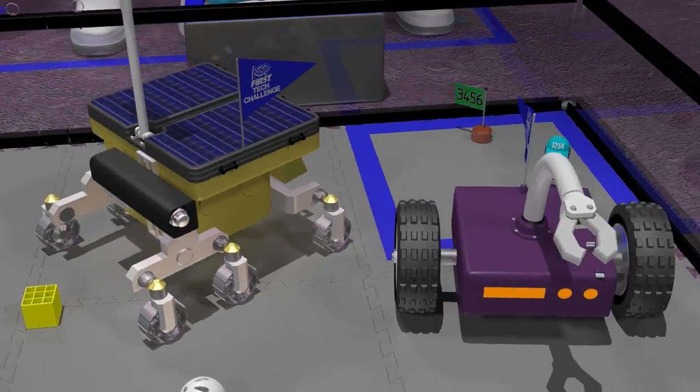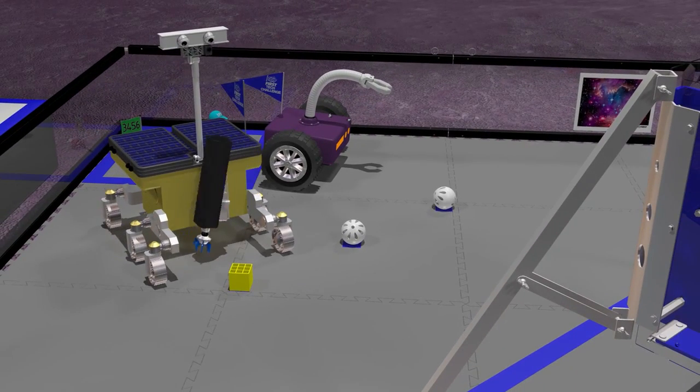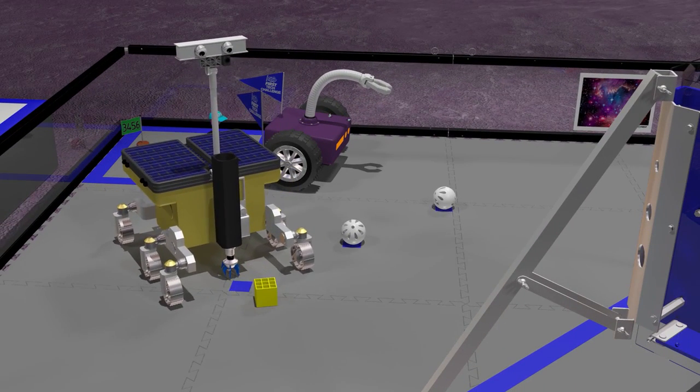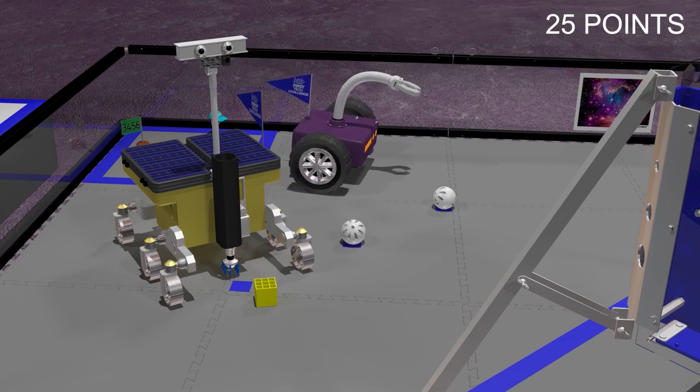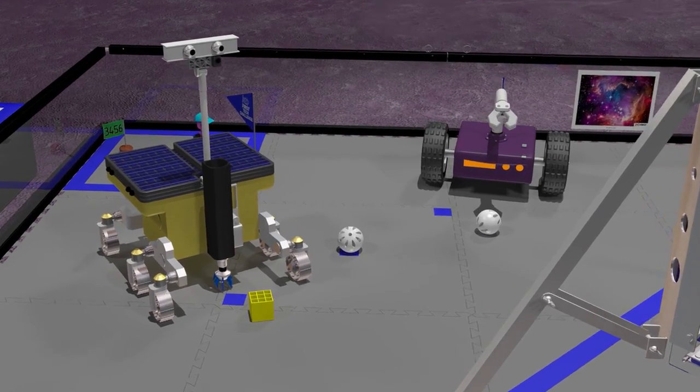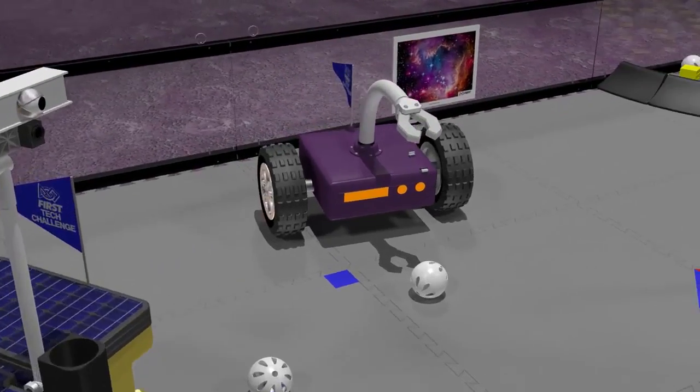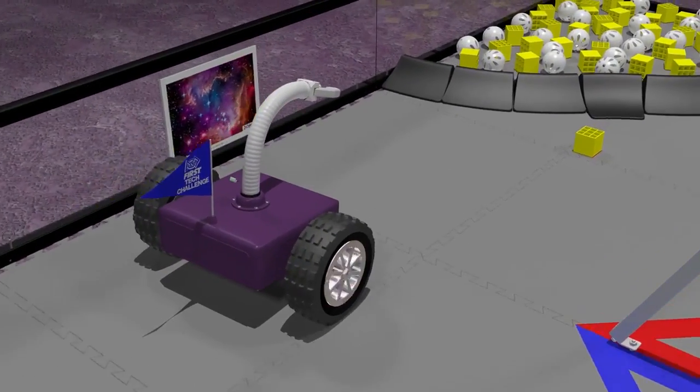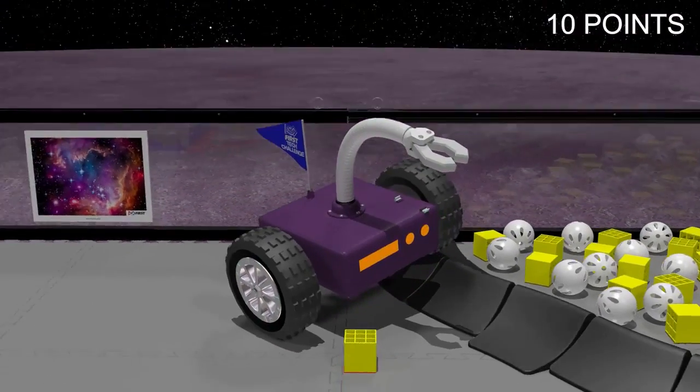Robots that successfully move the gold mineral completely off of its starting location in the sampling field earn a sampling bonus of 25 points. But if a silver mineral also moves, your alliance loses that bonus. And finally, robots that successfully park in any of the craters will earn a parking bonus of 10 points.